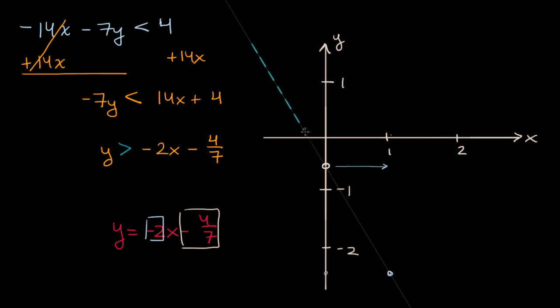Dotted line right over there to show that I'm not, it's not going to be equal to that. It's all the y's for any x that are greater than that. My spacing is getting a little sloppy. So that does the job. There you go.